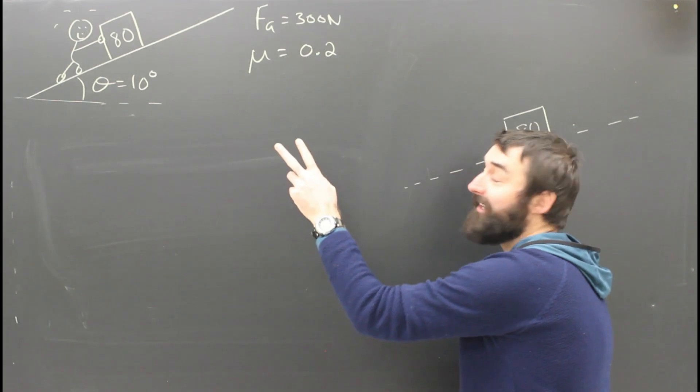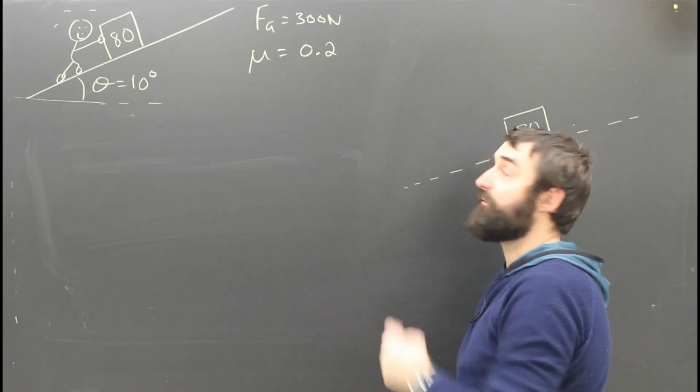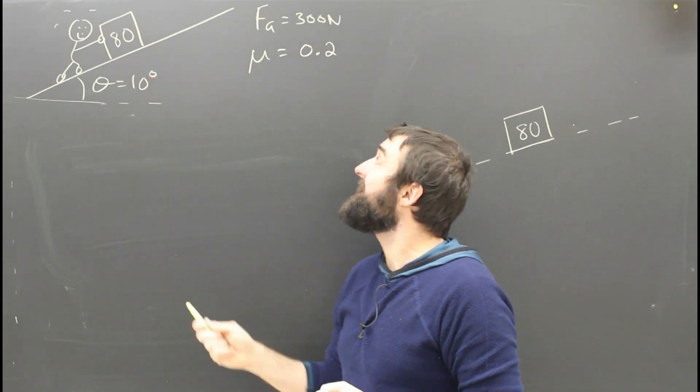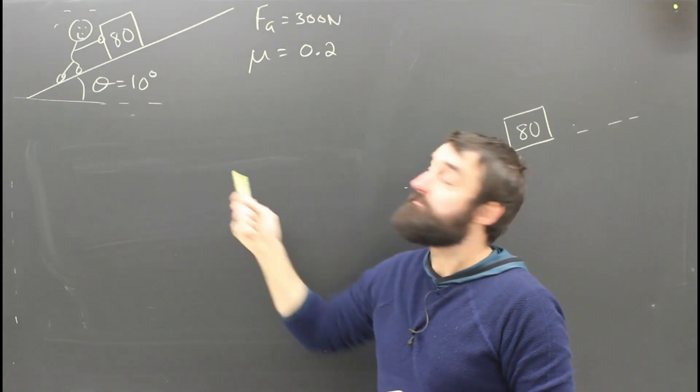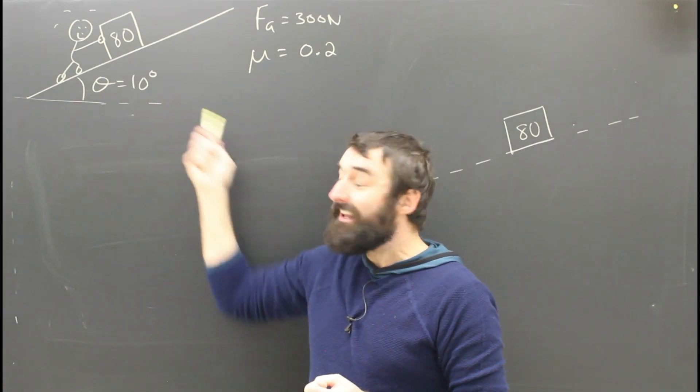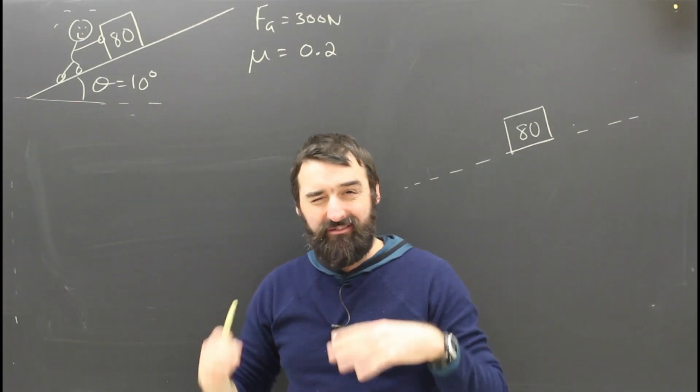In this question, a person is pushing an 80 kilogram box up the ramp. He's pushing with a force of 300 newtons, the box is 80 kilos, and the coefficient of friction between the box and the ramp is 0.2. The angle of the ramp is only 10 degrees, not very much.